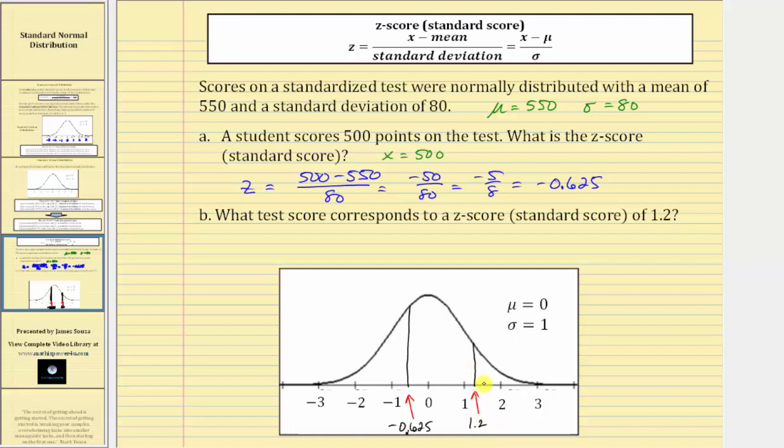So a z-score of 1.2 indicates the test score is 1.2 standard deviations above the mean of 550, which means x, the z-score, is equal to the mean of 550, and then plus the z-score of 1.2 times the standard deviation of 80, which is equal to 550 plus 96, which is equal to 646, and the units would be points. I hope you found this helpful.